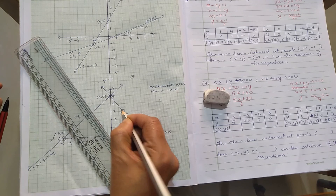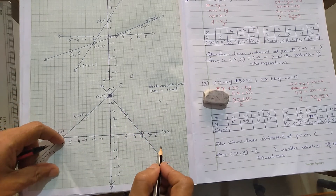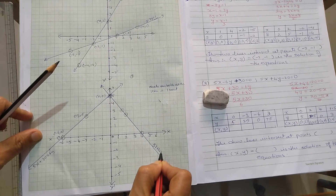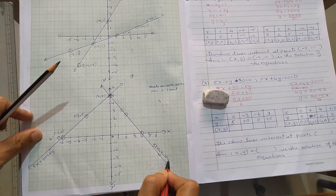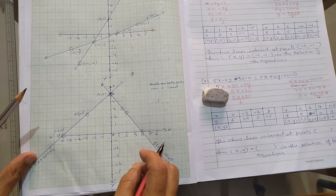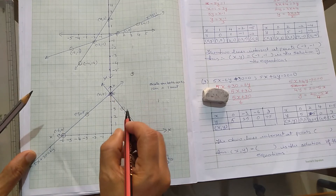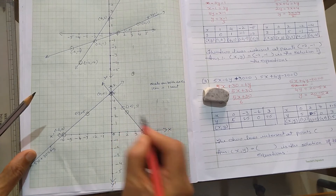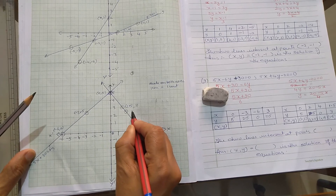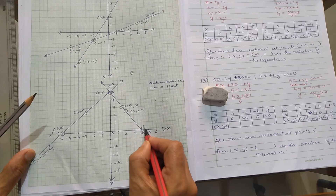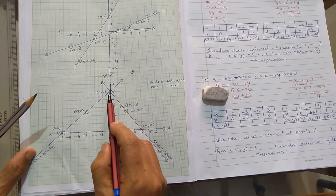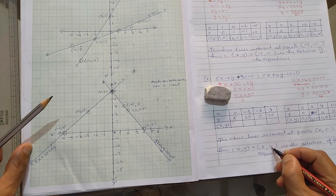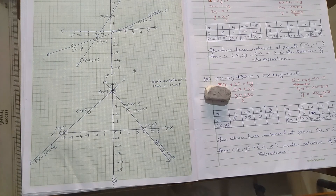Write the name of the equation: 5x plus 4y minus 20 is equal to 0. Write down the ordered pairs: (0, 5), (1.5, 3), (2, 2.5), and (4, 0). Both lines intersect at (0, 5), so x is 0 and y is 5. The solution of the equation is (0, 5).